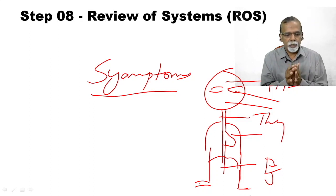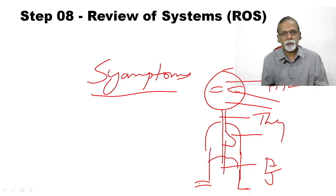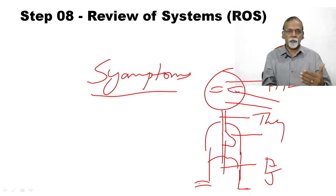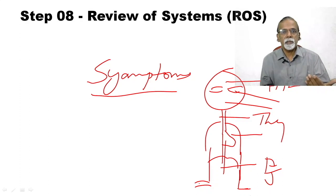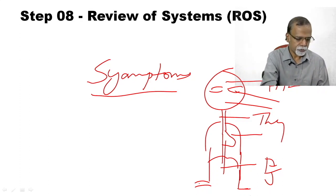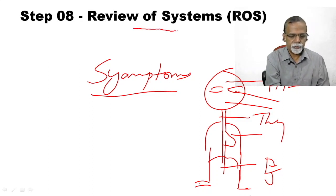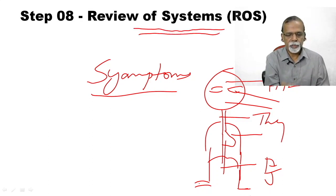And the review of systems is usually a negative story. If there are some positive symptoms, you can add it at the end of the history of presenting illness. You can say: in addition, the patient is having headache for the last so many days, something like that. If it is a long-lasting problem, you add it along with the past medical history. Again I repeat, this is symptom analysis, not examination findings.